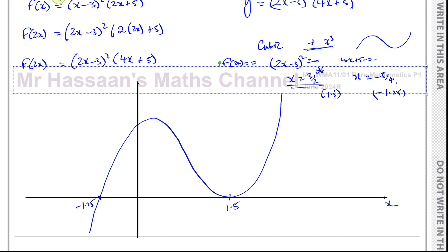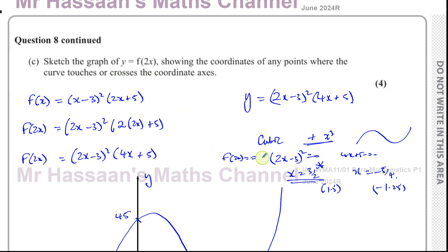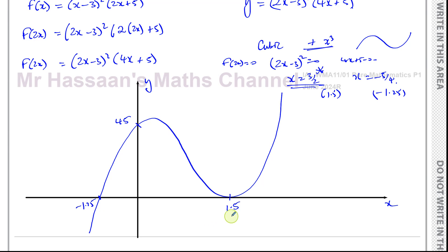There's the Y-axis. There's the X-axis. That's the point, 45. That's minus 1.25 on the X-axis. That's 1.5 on the X-axis. It says show the coordinates of any points where the curve touches or crosses the coordinate axes. So there we have, I'll write this in terms of coordinates. And that's 0, 45. That basically is the sketch of this curve. It goes through these points.